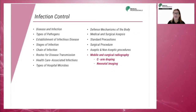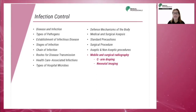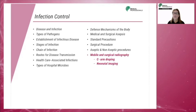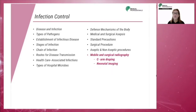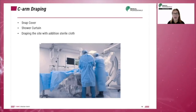In a surgical setting, the technologist must pay strict attention to sterile techniques. Identify the surgical team and the float nurse and communicate clearly with the operating room staff. Always be aware of the sterile corridor and respect its dimensions. When using the C-arm in the operating room, a sterile drape may be wrapped around the C-arm or a shower curtain wall drape can be used. C-arm draping can be accomplished using snap covers, shower curtains, or draping the site with additional sterile cloth.